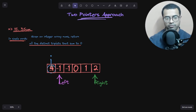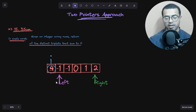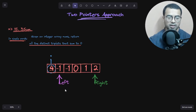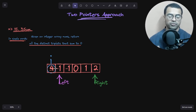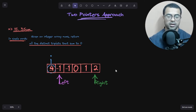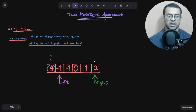We will start i from index zero but traverse until before the last two elements, to give enough space for left and right. Our aim is to find two other elements such that i plus left plus right equals zero. For example, if i is at minus four, we need two numbers that sum to four, so four minus four equals zero.